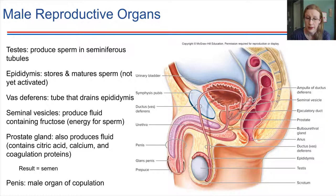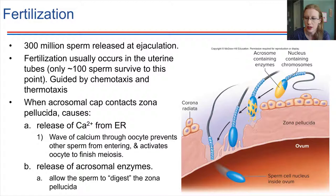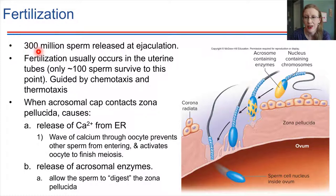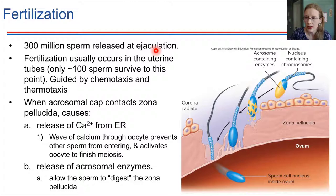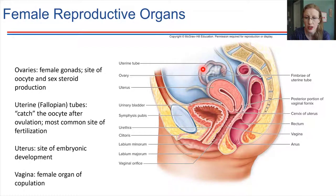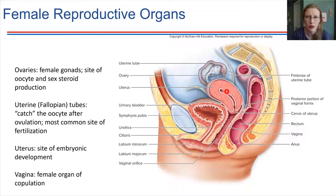Now let's jump to fertilization. Ejaculation has to happen first, so the sperm get released into the female body — into the vagina. Usually about 300 million sperm are released, but not very many survive all the way to potentially fertilize an egg. Only about 100 will make it all the way to the fallopian tubes where the egg cell is. So fertilization usually takes place in the fallopian tubes — the connection between the ovary and the uterus — and the fertilized egg then travels down to the uterus where it will embed and start to grow.